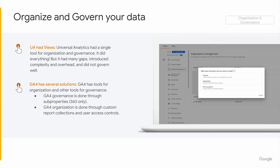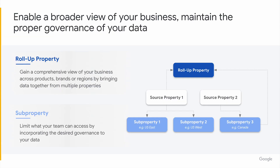For governance, we have sub-properties and roll-ups. Sub-properties are a property with a subset of data — you create a filter to define that subset, which you then give a subset of users access to. A roll-up works similarly to a Universal Analytics property in that it's a group of properties: it ingests data from multiple properties and processes all of that data together. The net benefit of GA4 roll-up properties over Universal Analytics is that it's not just a set of reports — a roll-up property is a fully-fledged property, fully featured, and ready to do everything you would expect an ordinary property to do.